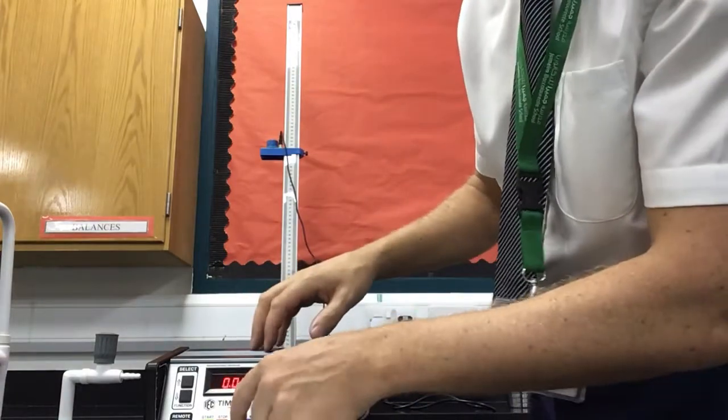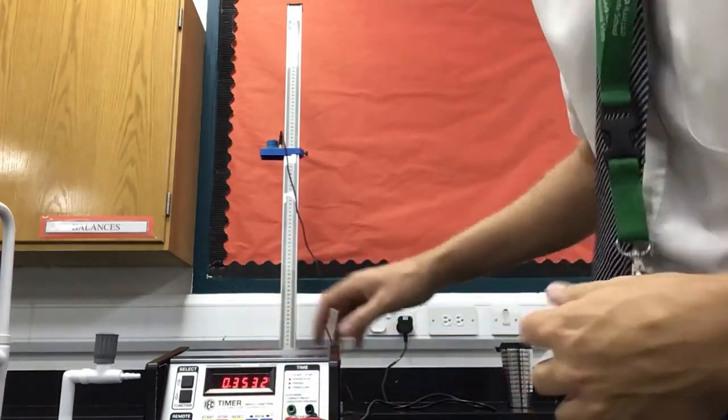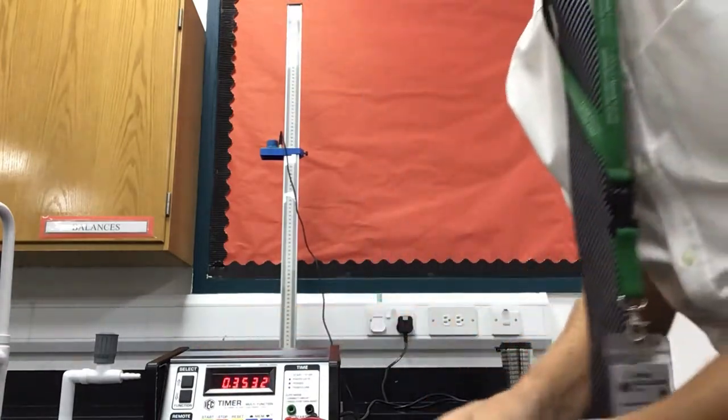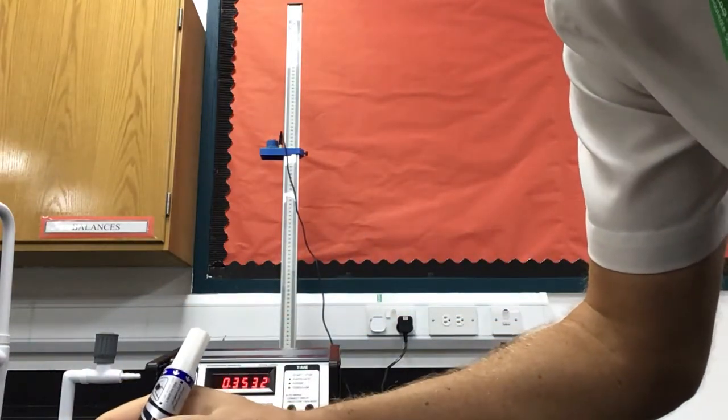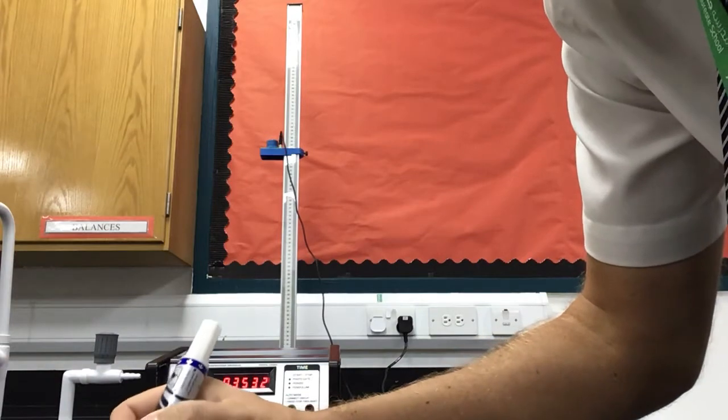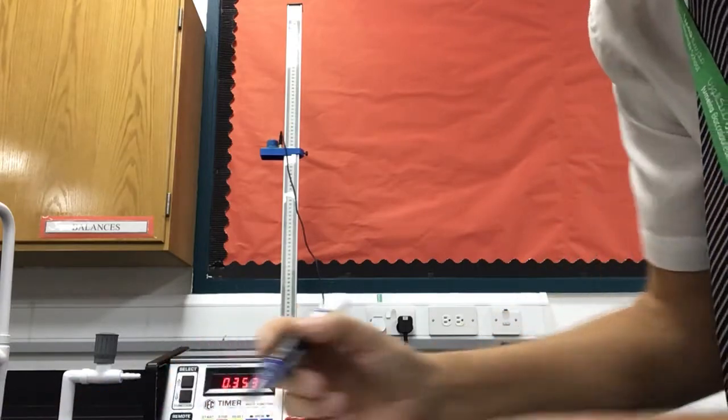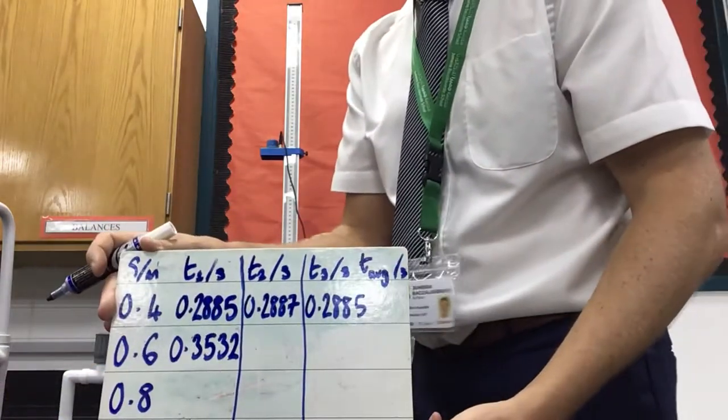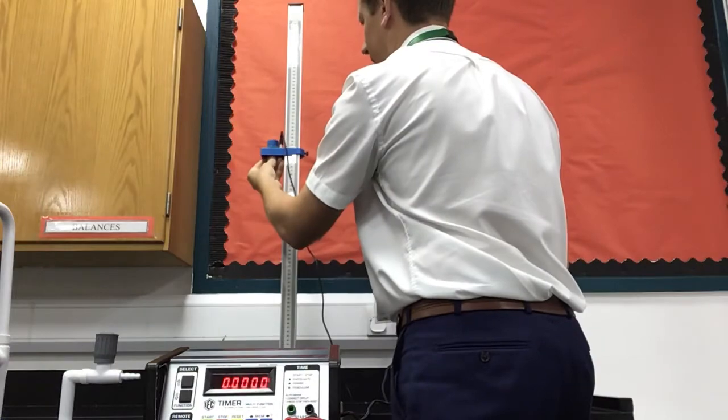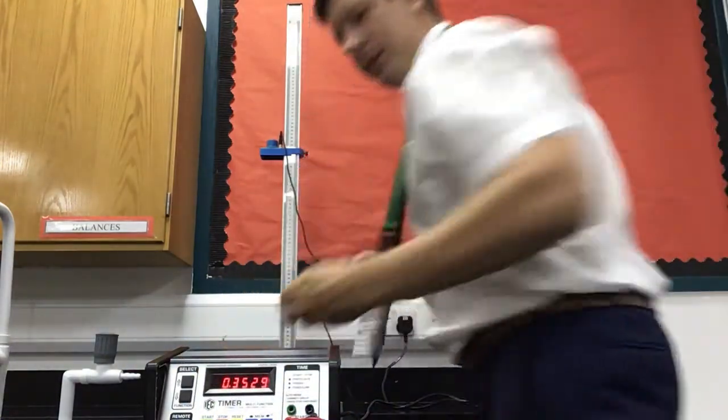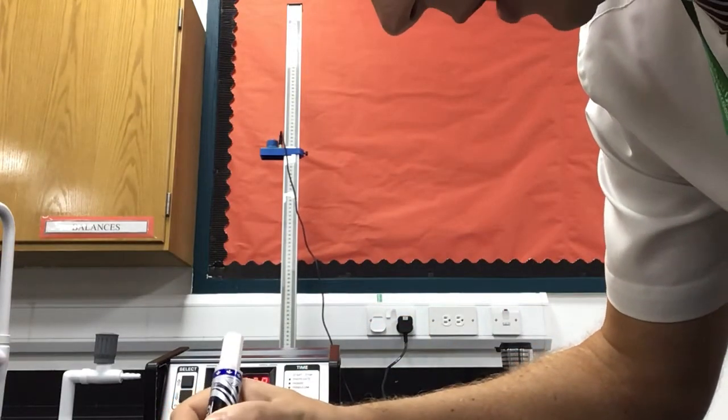Reset it, put the ball bearing in, press start. So our first time for 60 centimetres is 0.3532. Reset. Next reading. 0.3529.